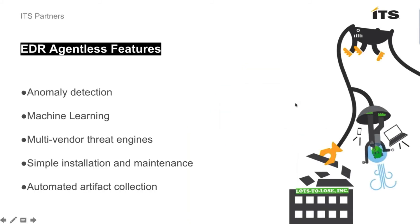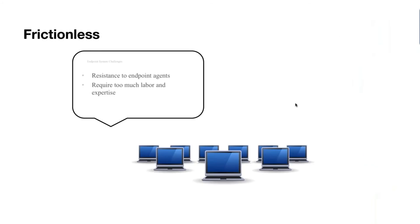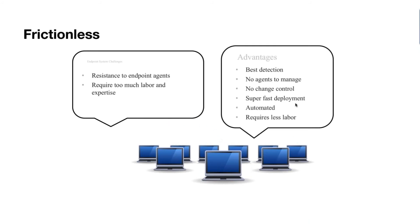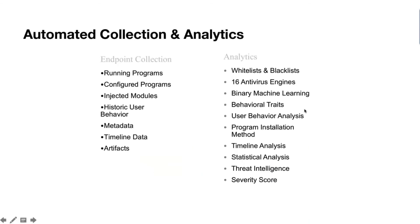EDR agentless features include abnormality detection, machine learning, multi-vendor threat engine, simple installation and maintenance, and automated artifact collection. It is frictionless — endpoint agents require too much labor and expertise. The advantages include best detection, no agent to manage, no change control, super fast deployment, and automated processes requiring less labor to get deployed and up and running.